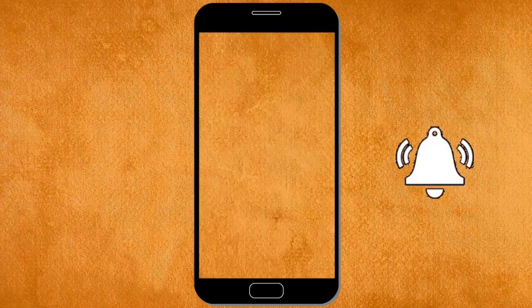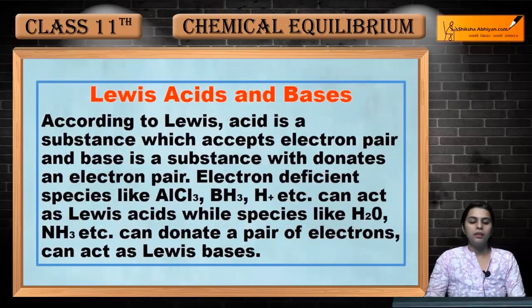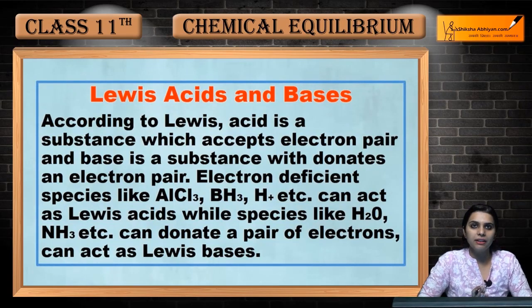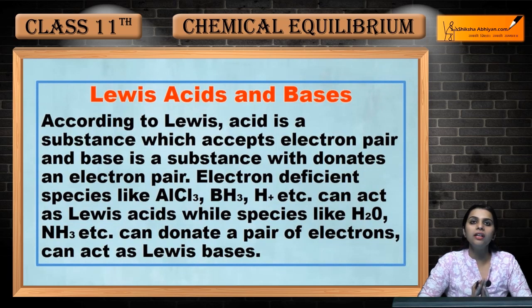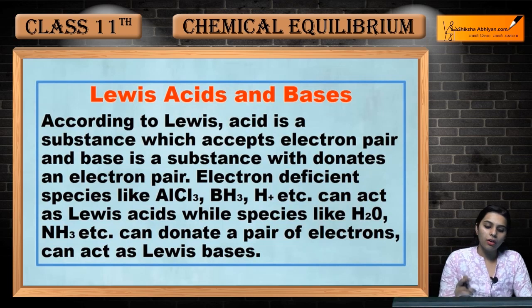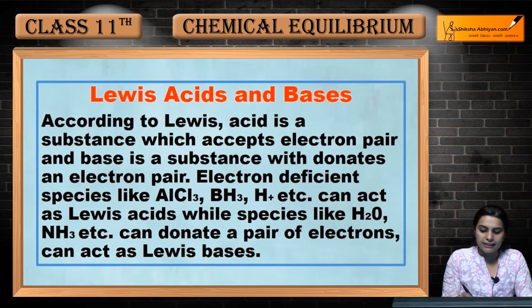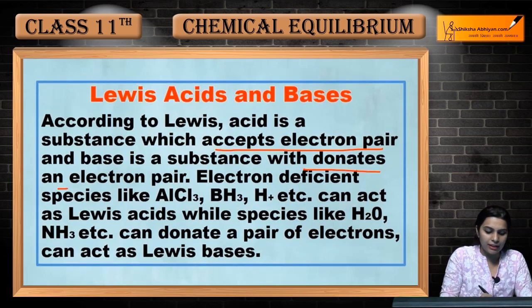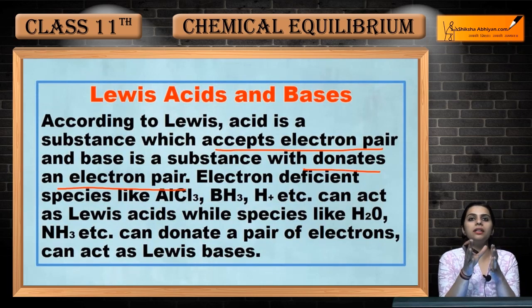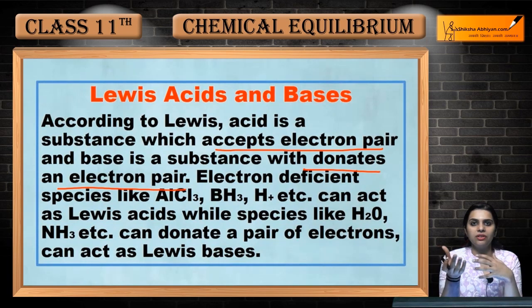Next is Lewis acid-base theory. We have already studied Arrhenius theory, then Bronsted-Lowry acid-base concept. Now the third one is Lewis acid-base theory. According to Lewis, an acid is a substance which accepts an electron pair, and a base is a substance which donates an electron pair.